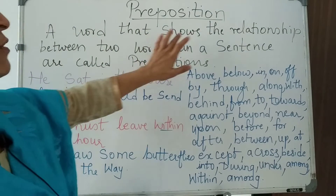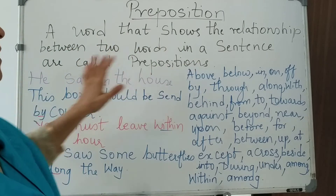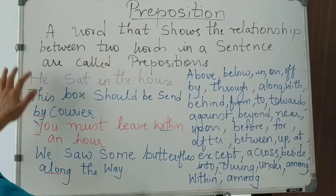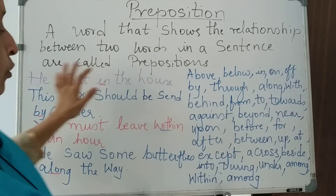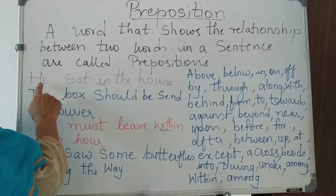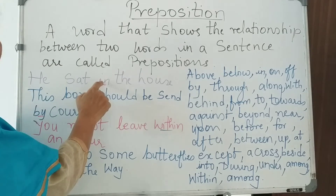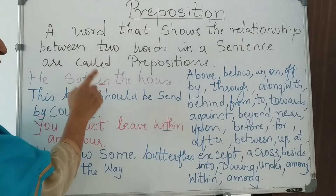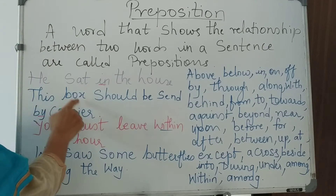A word that shows the relationship between two words in a sentence is called a preposition. For example: 'He sat in the house.' So this 'in' is a preposition — he is sitting, and he and house have a connection. The connection is shown by the word 'in'.